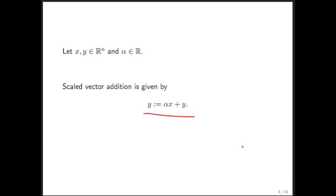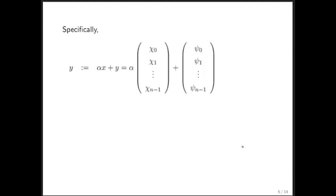So what are we doing here? We're taking vector y, we're adding a scaled version of vector x to it, and we're then assigning the result to vector y. More specifically, y becomes alpha x plus y. We expose the components of x and y.